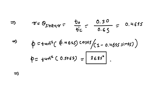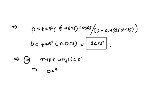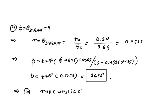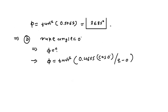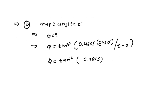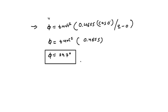In the next sub-part, we change the rake angle to 0 degrees and find the new shear plane angle phi. The formula is the same: phi equals tan inverse of 0.4615 multiplied by cos 0 degrees, divided by 1 minus 0.4615 multiplied by sin 0 degrees. Since sin 0 equals 0, this simplifies to tan inverse of 0.4615, giving phi equal to 24.7 degrees.